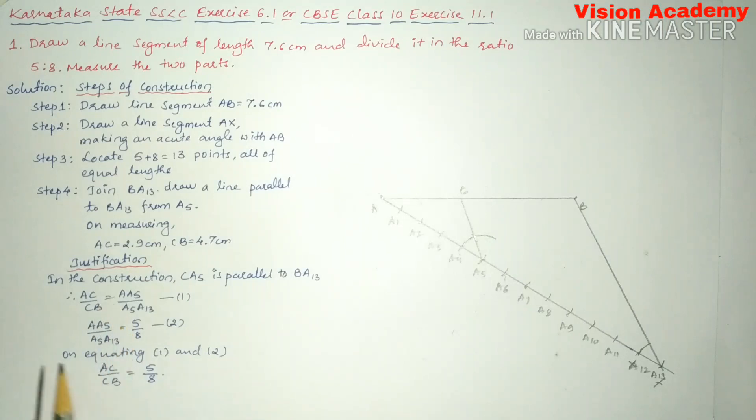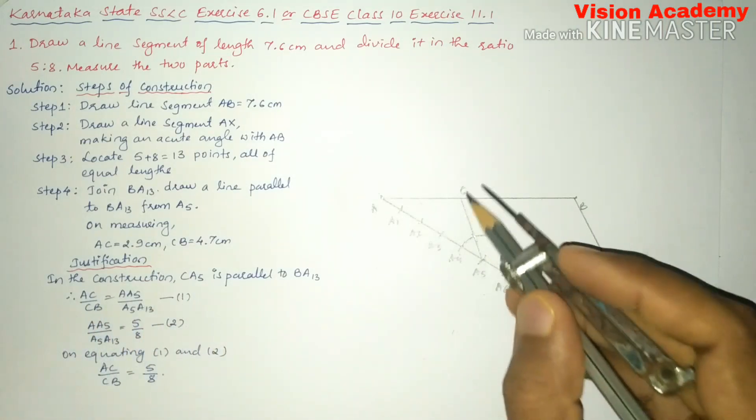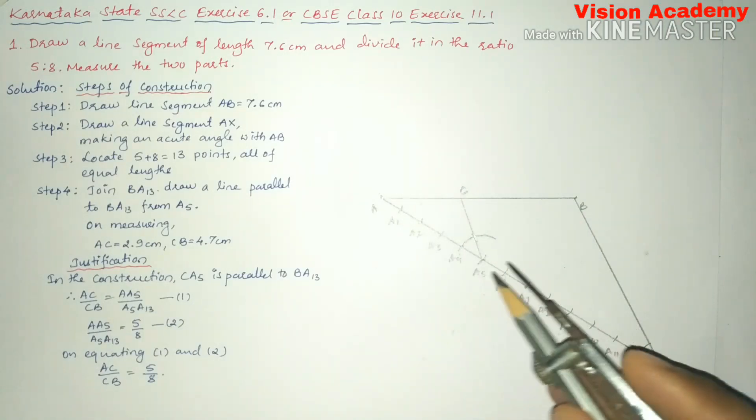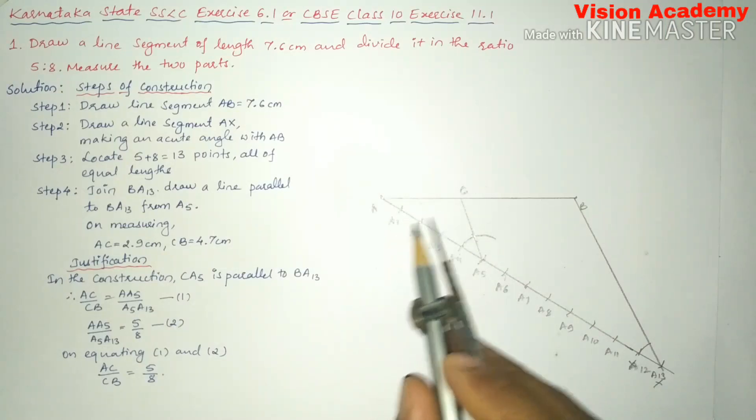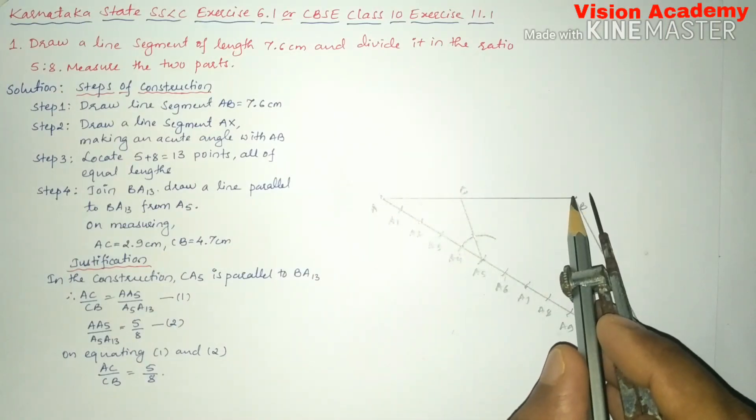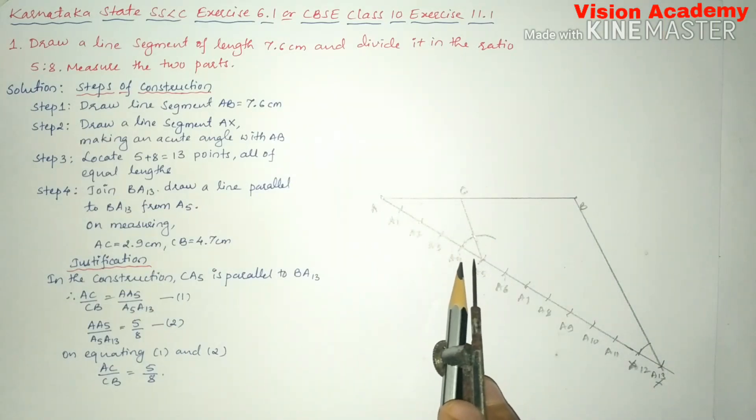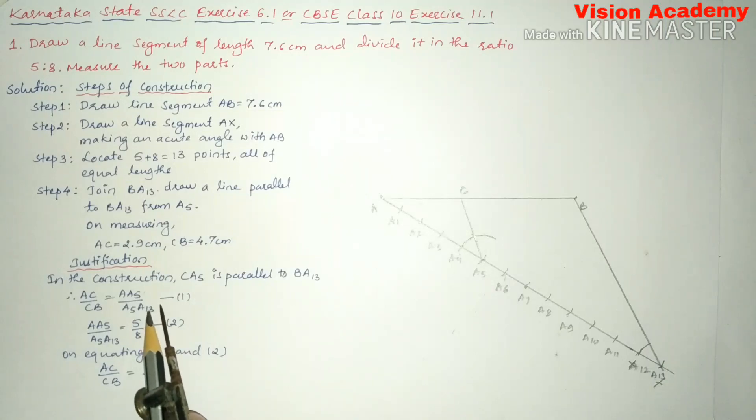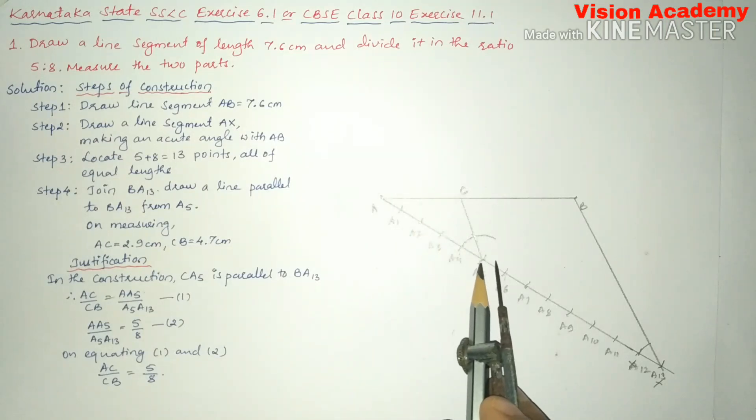Now justification. In the construction CA5, that is CA5 which is parallel to BA13, therefore we can write as per basic proportionality theorem, AC divided by CB is equal to AA5 divided by A5A13. So that is AA5 divided by A5A13. So here AA5 divided by A5A13 is equal to 5 divided by 8 because it is divided in 5 into 8 proportions.